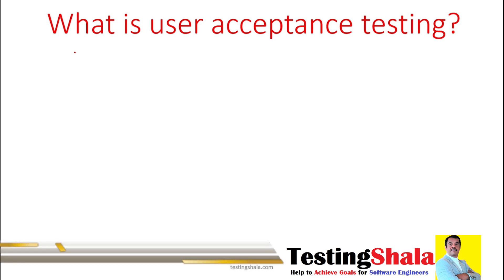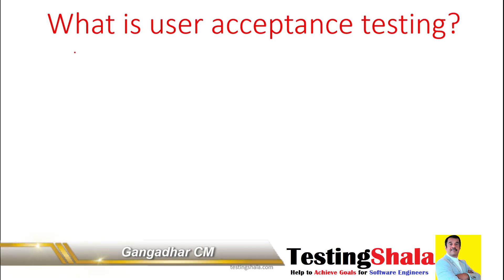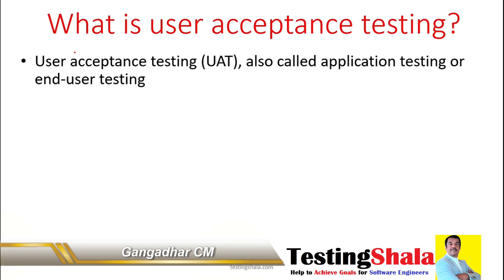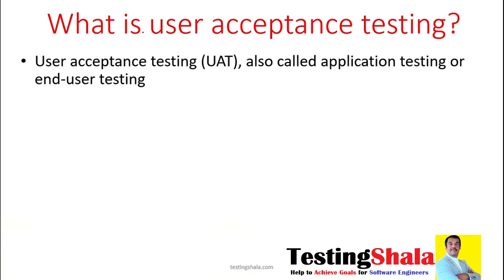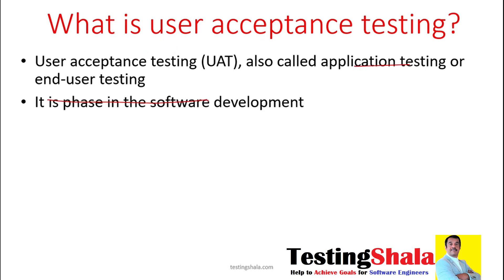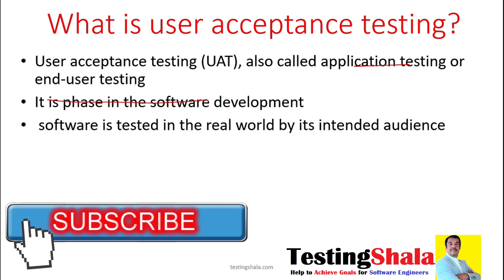The first interview question is: what is user acceptance testing? User acceptance testing is another kind of application testing, and we can also call it end user testing. It is also a phase in the software development lifecycle, similar to system testing, integration testing, and unit testing. The main purpose of UAT is that it is tested by the customer itself.